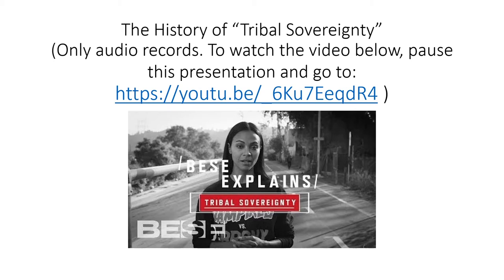Before the constitution existed, before the US itself existed, American colonizers struck tons of treaties with the indigenous tribes and thereby recognized tribes as independent nations. And when the constitution was enacted in 1788, it too recognized their sovereignty — not just from the federal government, but also from states and foreign nations. But soon after, their sovereignty was put at risk.